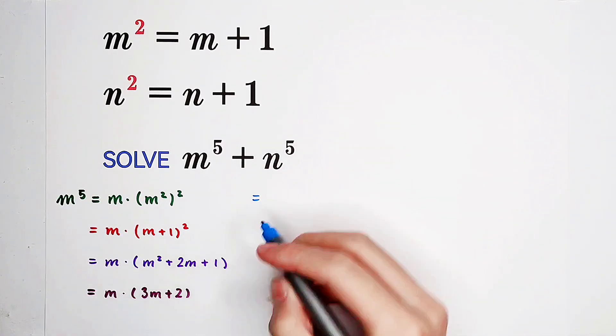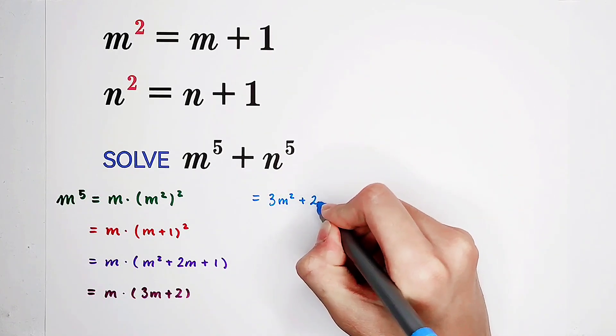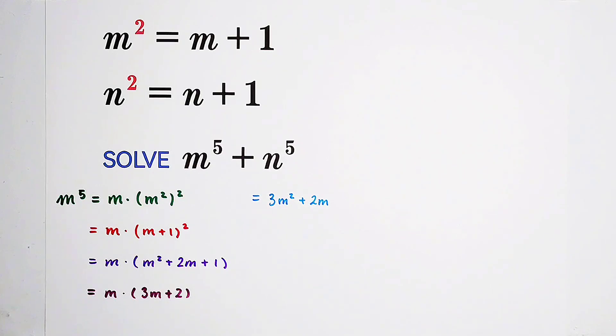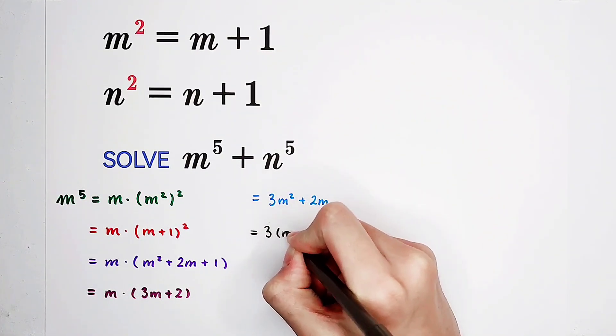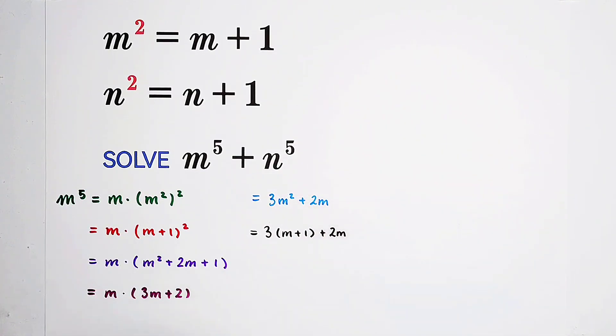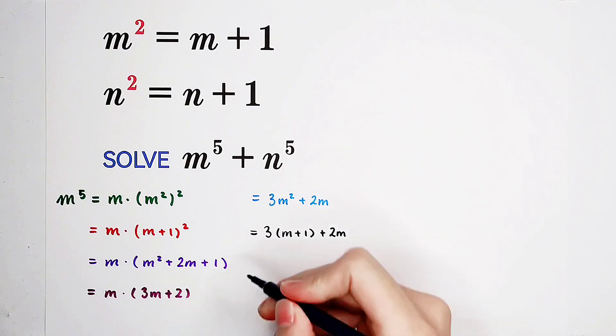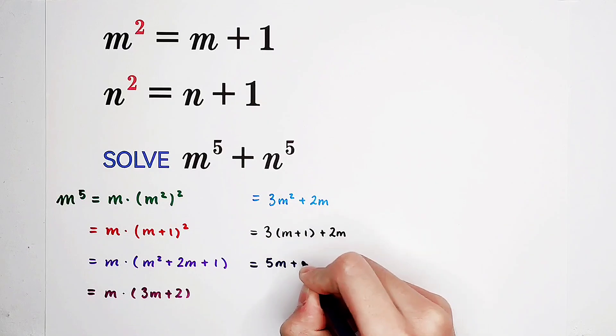Then this is 3m squared plus 2m. And this m squared is m plus 1. So it is just 3 times m plus 1 and then plus 2m. At last, it is 3m plus 2m, 5m, then plus 3.